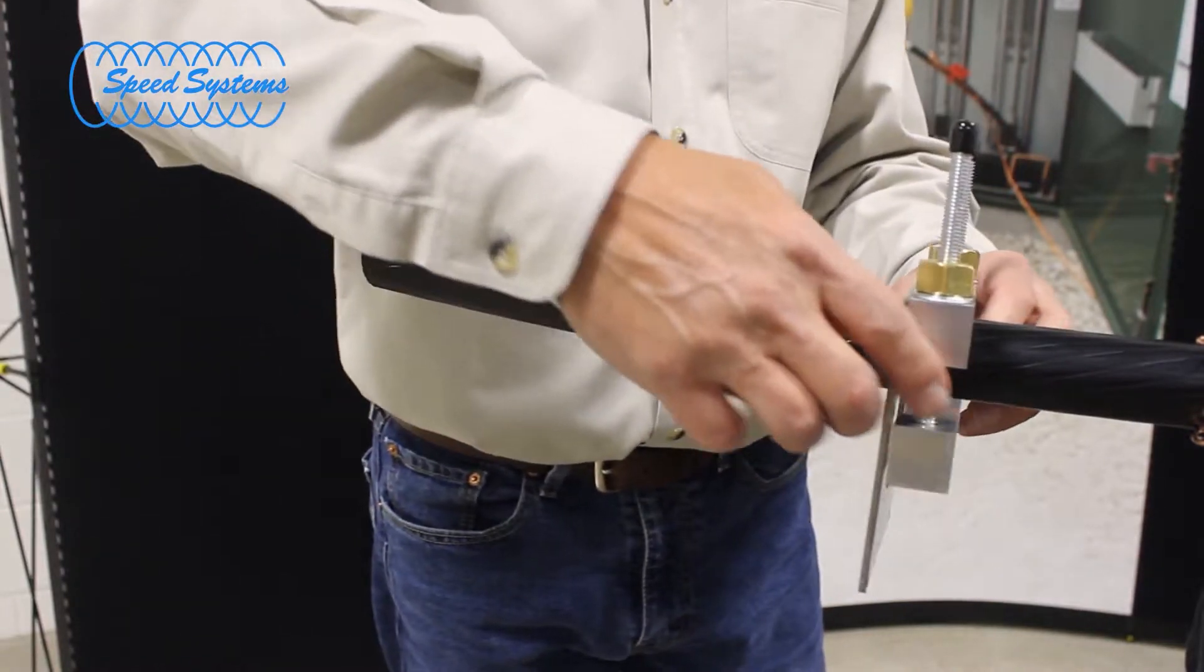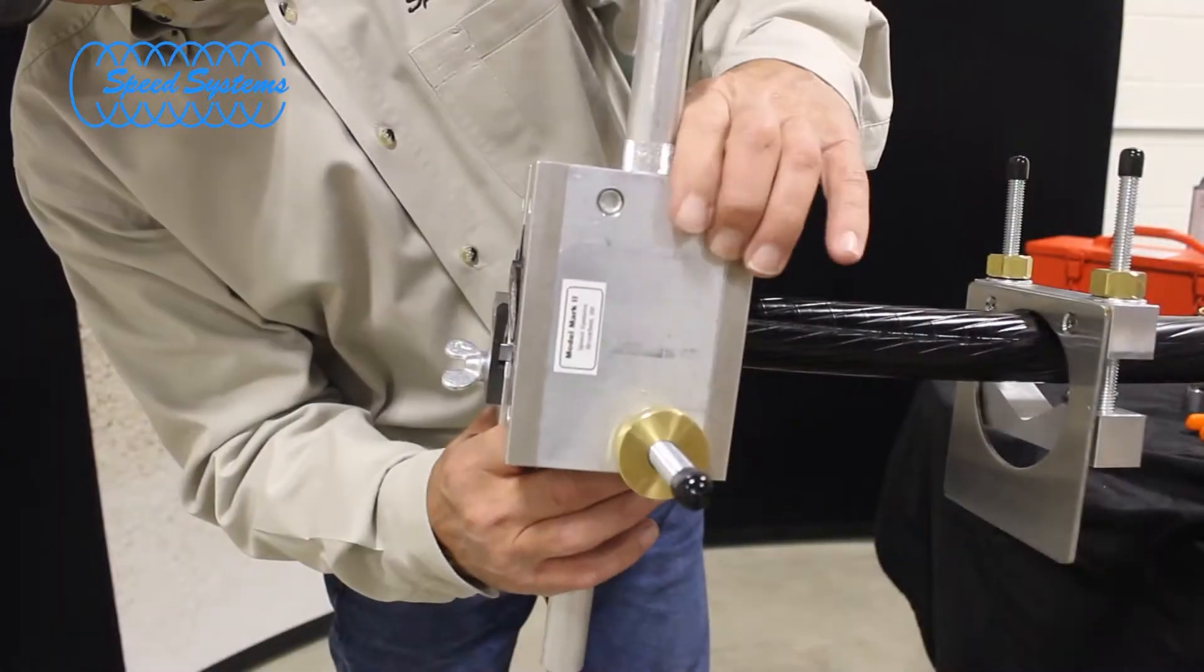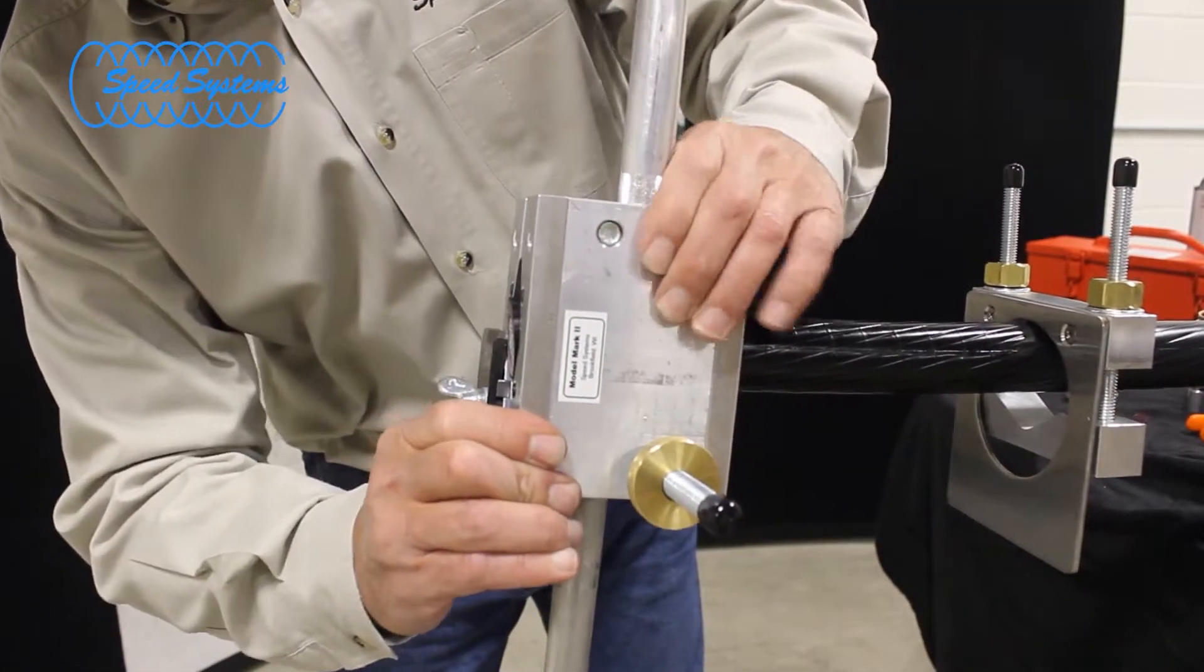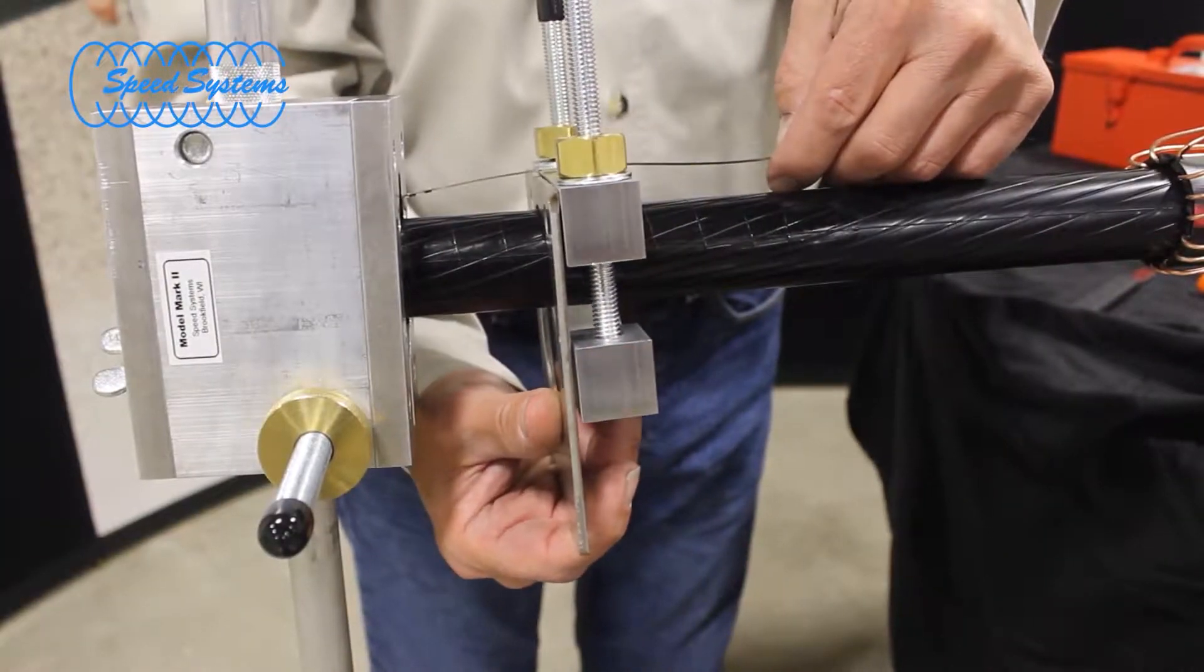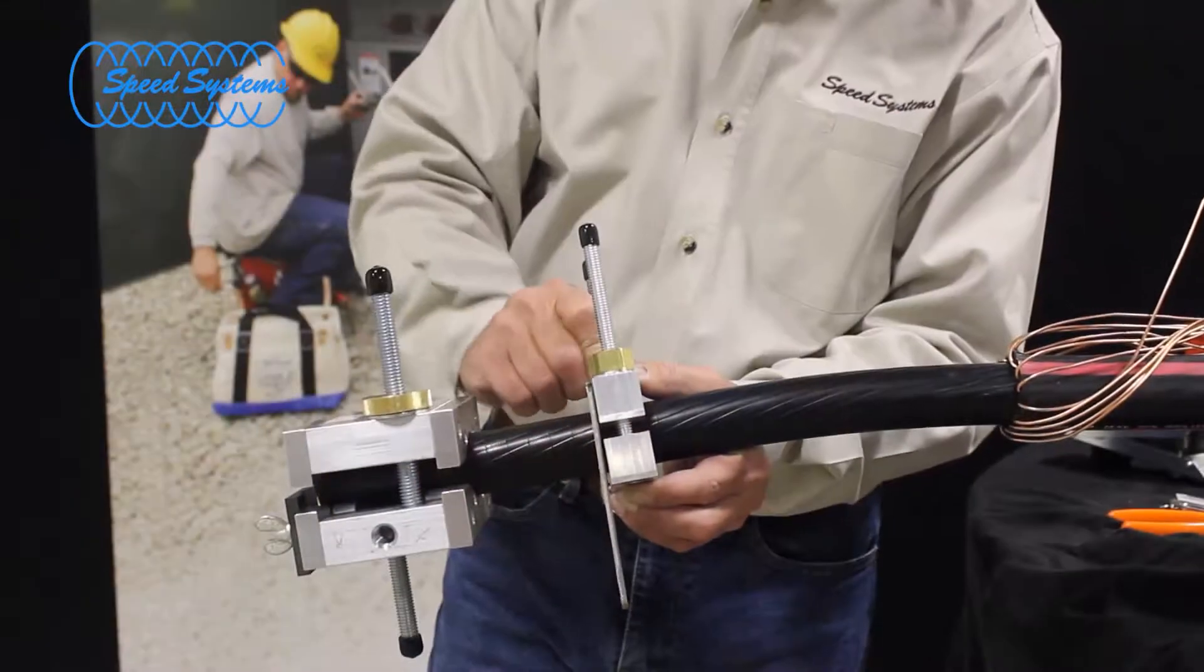Next, slide the tool stop onto the cable and clamp the Mark II onto the end of the cable. Measure the strip back length from the back of the tool and firmly clamp the tool stop to the cable at that point.